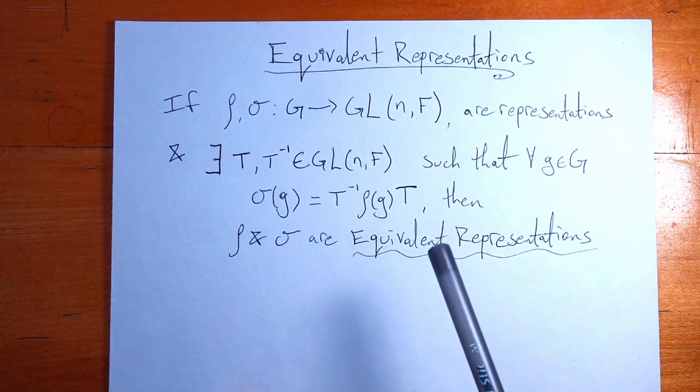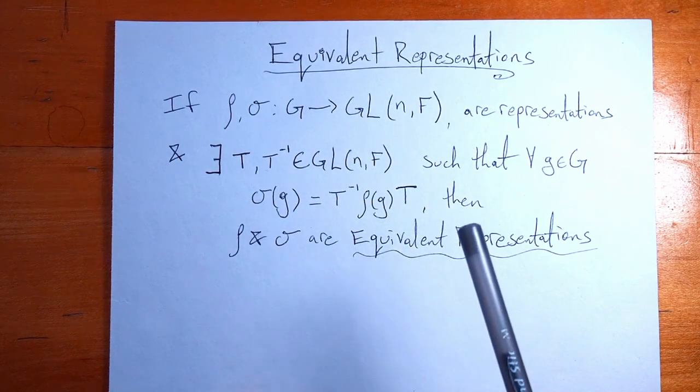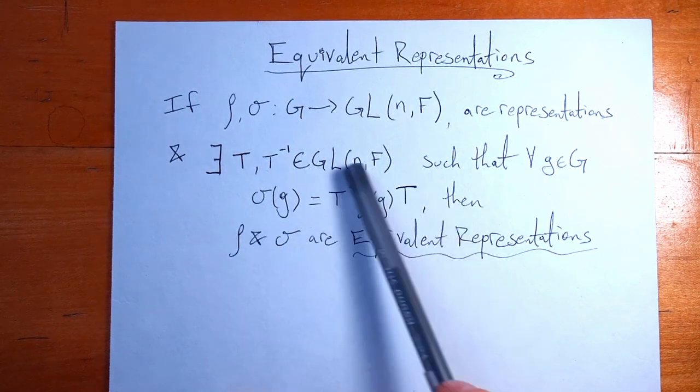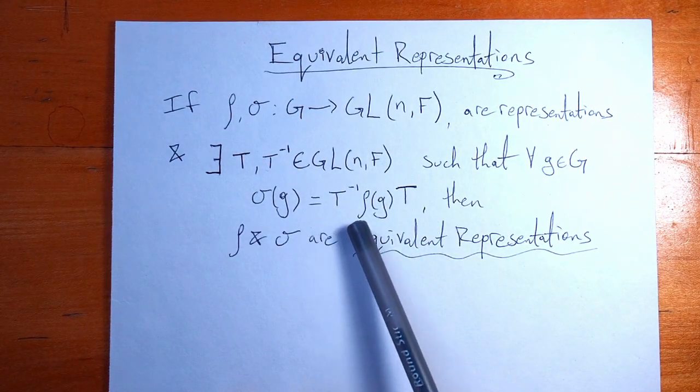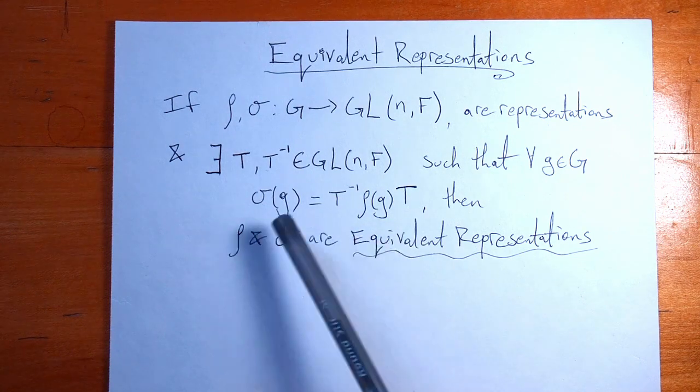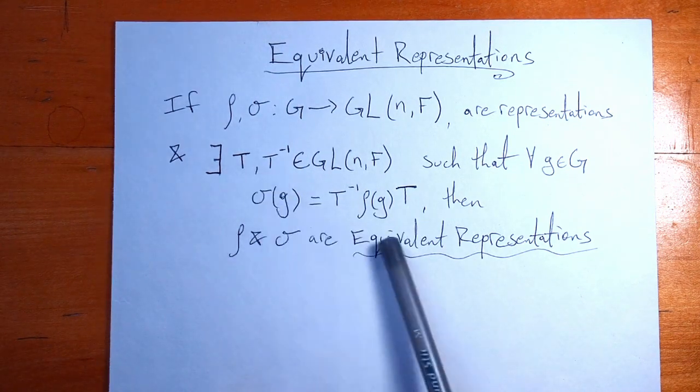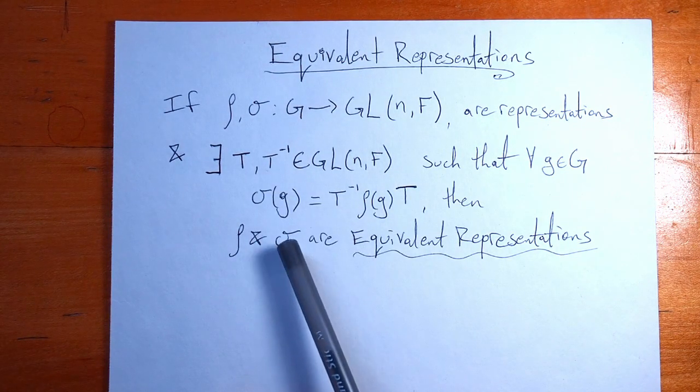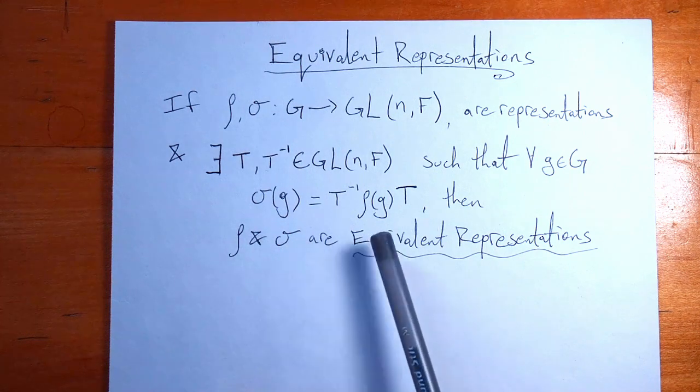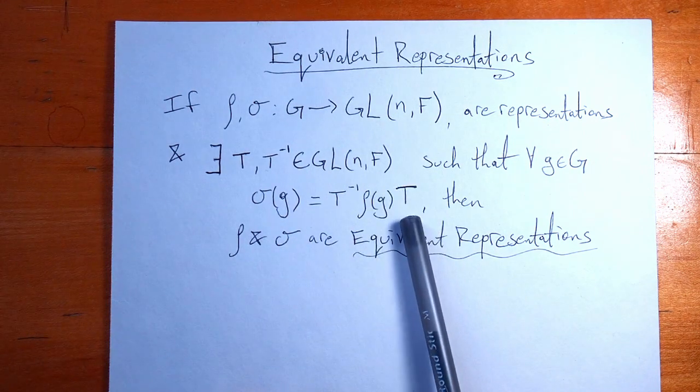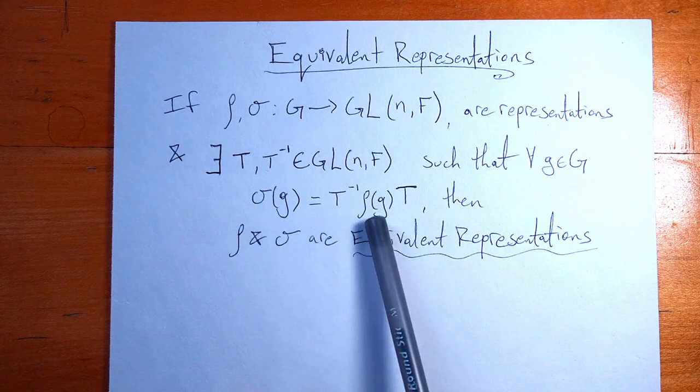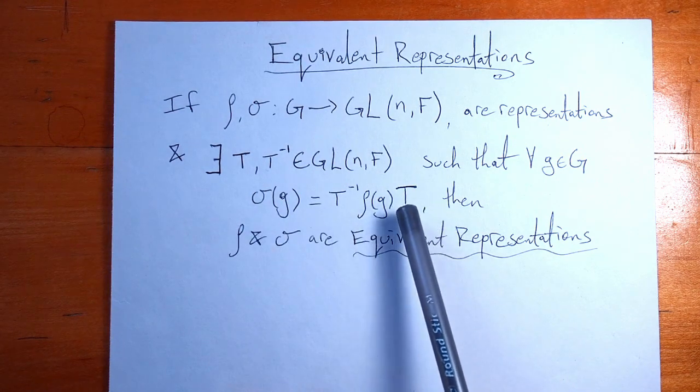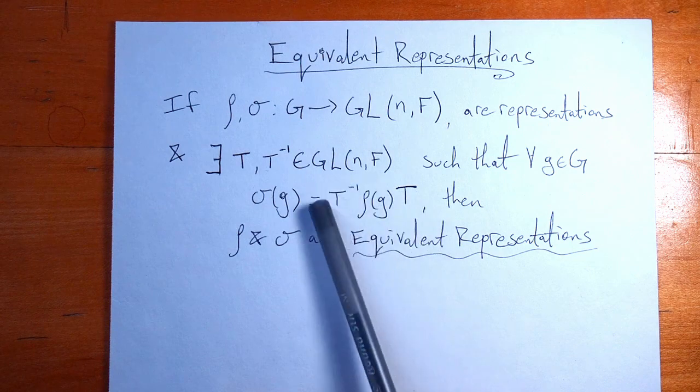When I first started studying representation theory, the first thing I was worried about is how similar matrices come into play. Because when two matrices are similar, they're the same matrix, just written in a different basis. You can think of T as a change of basis matrix. When you change the basis of a vector, you multiply it by T. But to change the basis of a matrix, you multiply it by T and its inverse, like this.